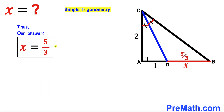So our final answer is X equals 5 divided by 3 units. Thanks for watching, and please don't forget to subscribe to my channel for more exciting videos. Bye!